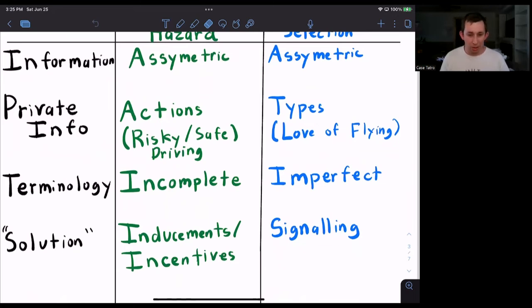The solution for the moral hazard problem is what we call inducements or incentives, where we try to persuade the person we're giving insurance to through carrots or sticks, through punishments or rewards, in order to drive safely, which is what we want them to do.